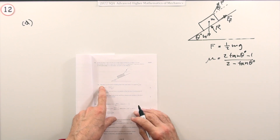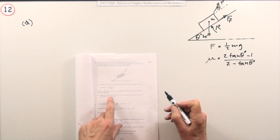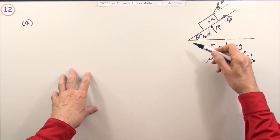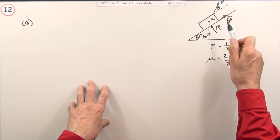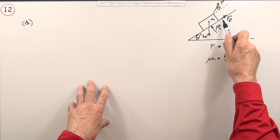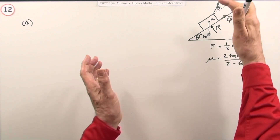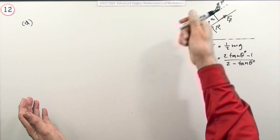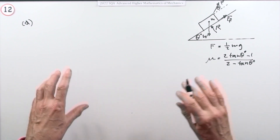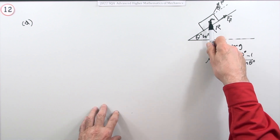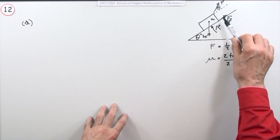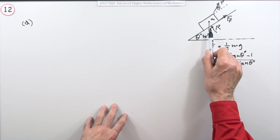Part A: the box is on the point of sliding down when the force equals half mg. Show that this gives the expression for the coefficient of friction. I've already marked all the forces in the diagram, including friction, which is variable — it opposes motion. If it's on the point of sliding down, friction acts up the slope. For components, you can choose horizontal and vertical or along and perpendicular to the slope. I'll go with along and perpendicular to the slope.